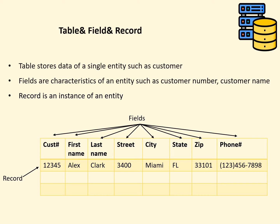The primary concepts of a database include table, field, key, and relationship. A table stores information about an object or person, such as customer, order, and item. In a database, each table contains information about a single entity. Fields are the characteristics associated with an entity. For example, a customer table can be described by customer number, first name, last name, street, city.